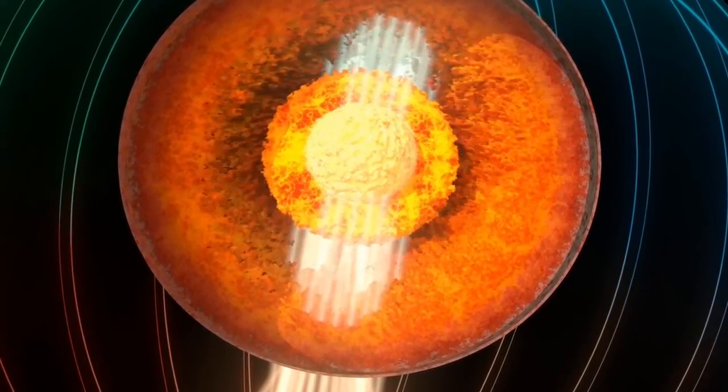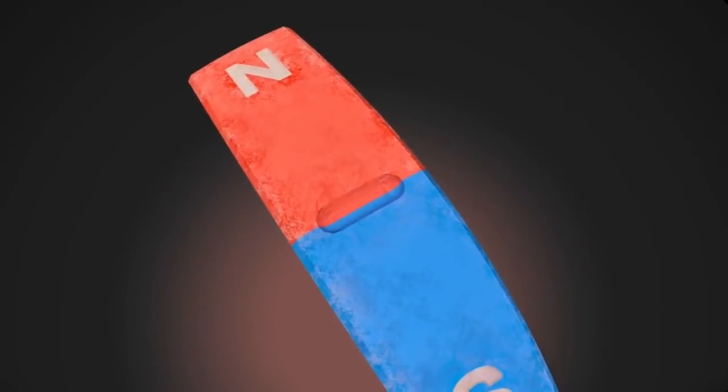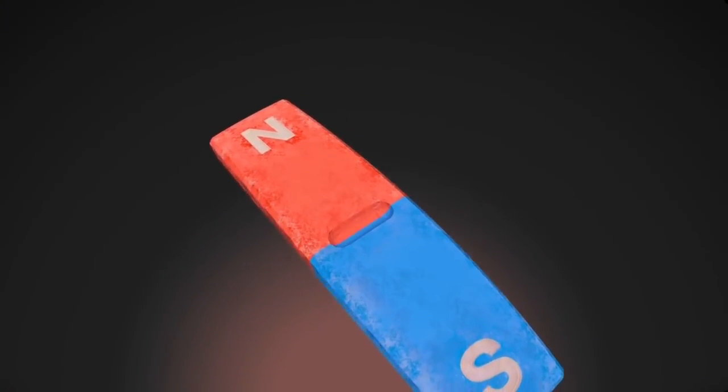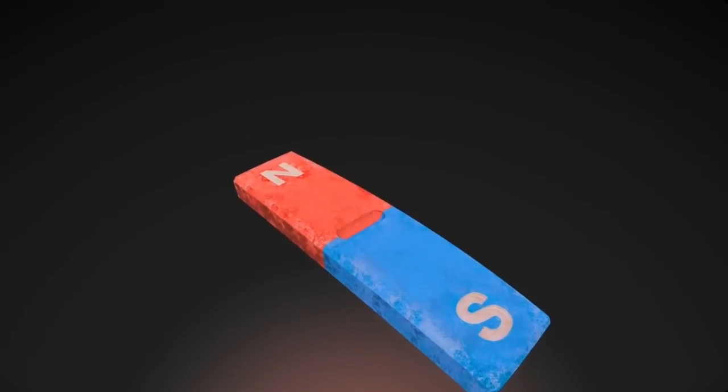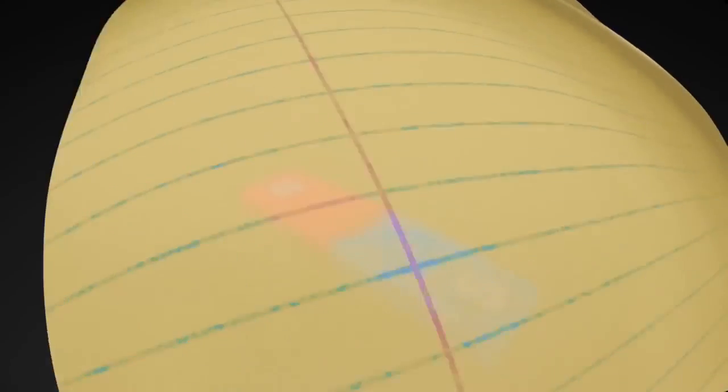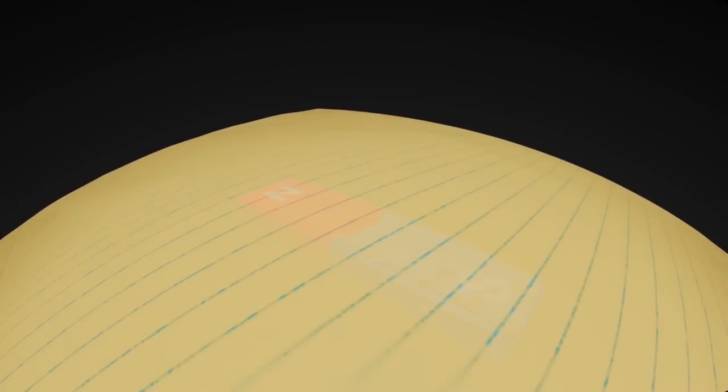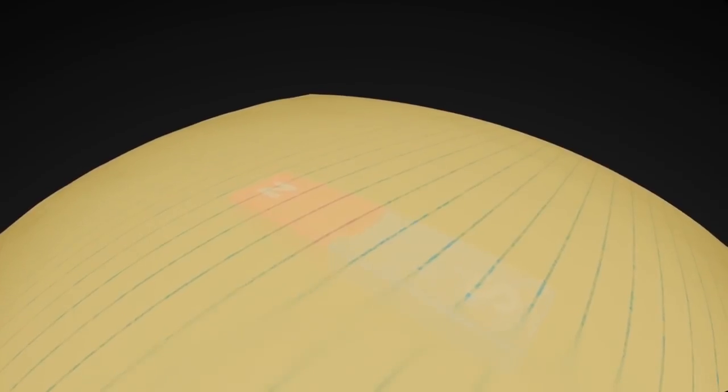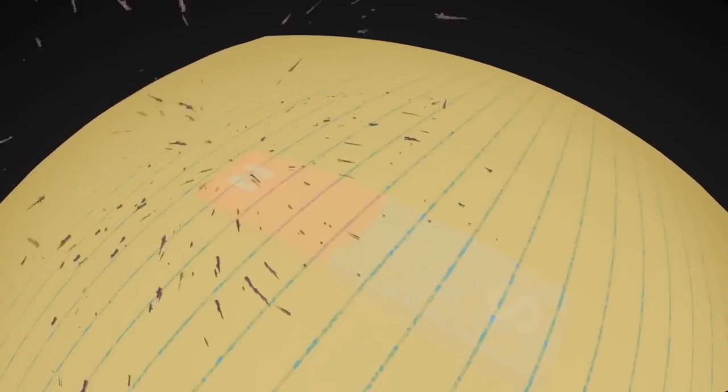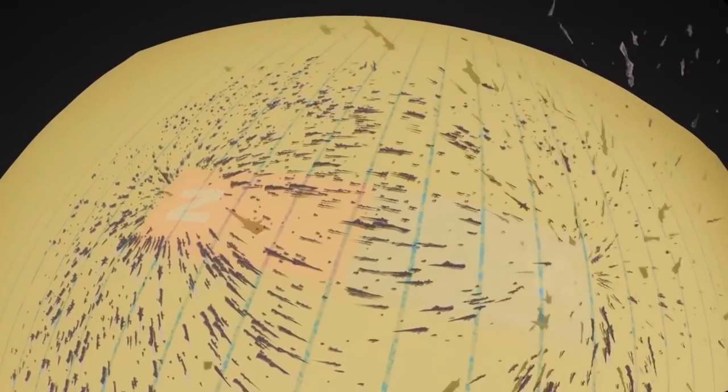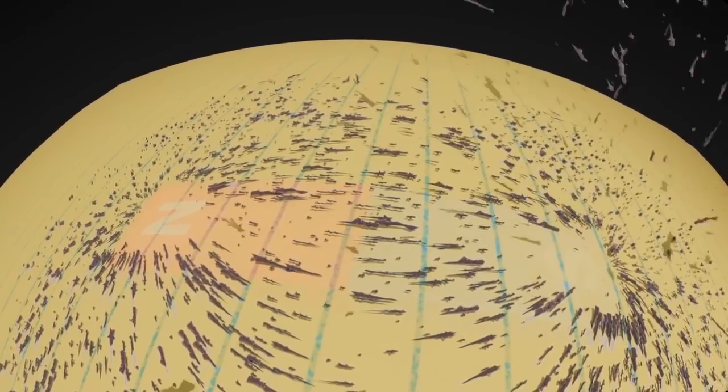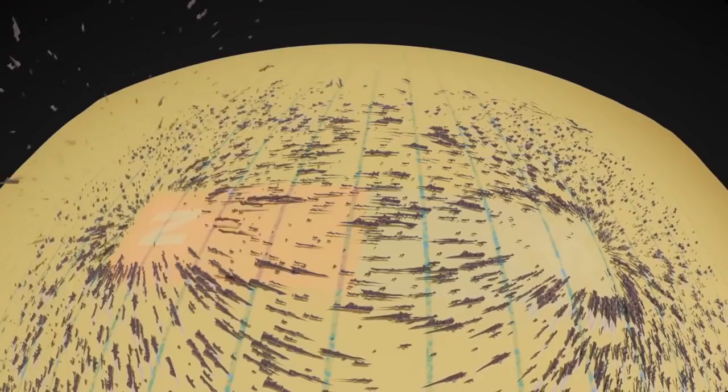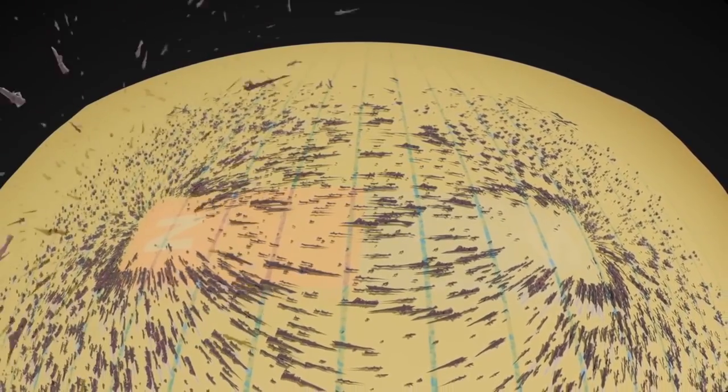This geodynamo turns Earth into a large bar magnet with north and south poles. We can see a bar magnet's magnetic field by dropping iron filings on a piece of paper above the magnet. The filings line up with the direction of the magnetic force. Earth's magnetic field has these same lines of force connecting its north and south poles.